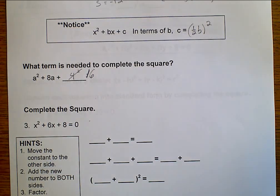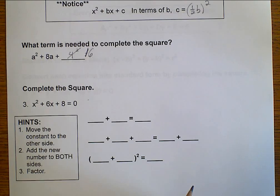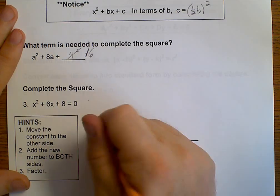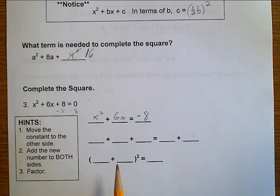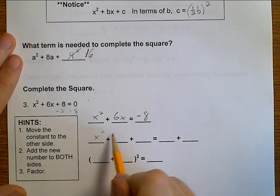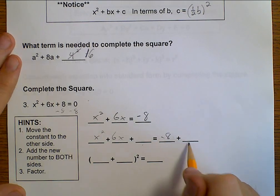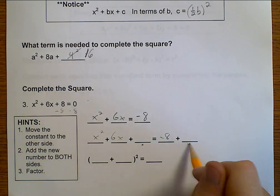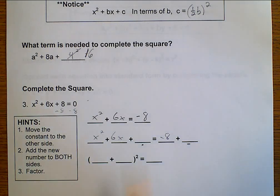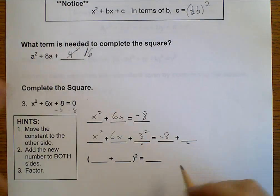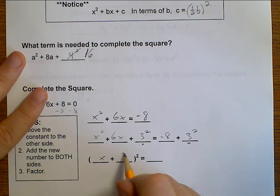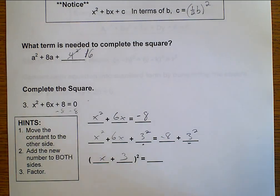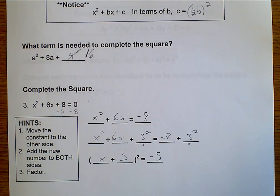Now we're going to practice completing the square. The first thing is move the constant to the other side, so we have x squared plus 6x equals negative 8, because I need to subtract 8 from both sides. Now we put x squared plus 6x plus something equals negative 8 plus that same something. We complete the square — this would be 3 squared. If I add 3 squared on this side, I add 3 squared on that side, giving us x plus 3 squared equals negative 8 plus 9, which is negative 5. And so we have completed our square.